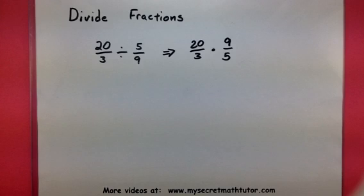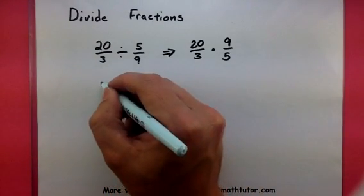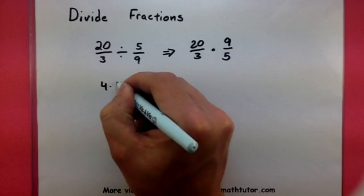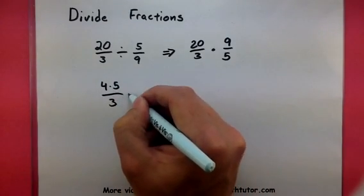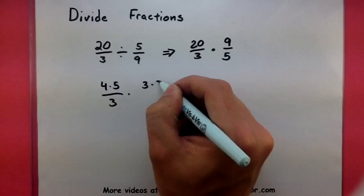To make this easier, make sure you look for common factors in the top and in the bottom. So let's go ahead and break these out. Twenty is four times five, all over three. Nine is the same as three times three.